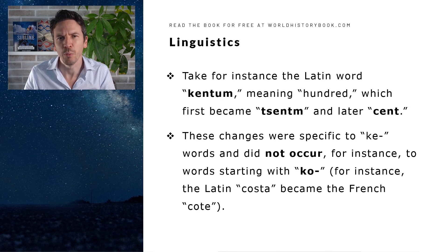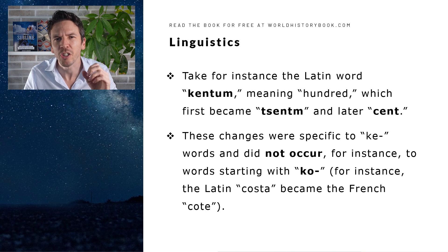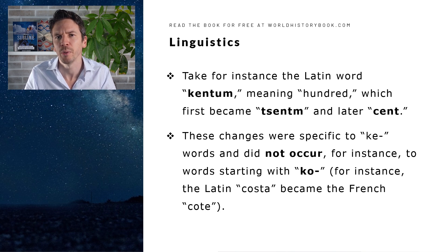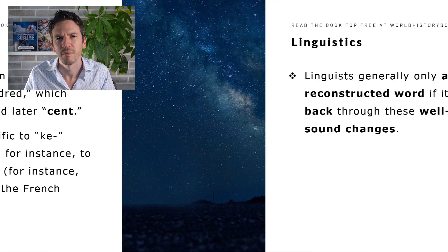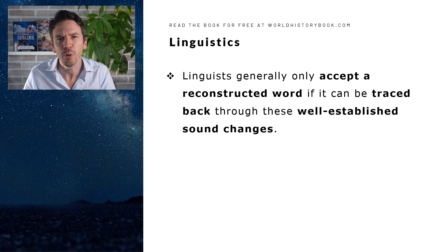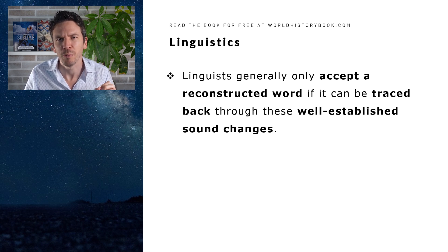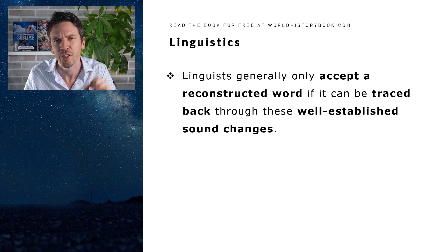Take for instance the Latin word cantum, meaning hundred. It became centum in medieval French, and later sans. And these changes were specific to the que sound, and did not occur for instance to words starting with co — for instance, the Latin costa became cote in French. And here we've come to an important principle of linguistics: linguists generally only accept a reconstructed word if it can be traced back through these well-established sound changes.